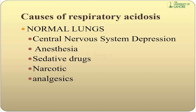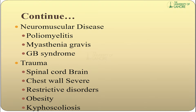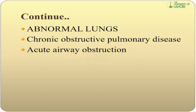Causes of respiratory acidosis — in normal lungs: central nervous system depression, anesthesia, sedative drugs, narcotics, and analgesia. Neuromuscular diseases include poliomyelitis, myasthenia gravis, and Guillain-Barré syndrome. In trauma: spinal cord or brain injury, chest wall severe injury, restrictive disorder, obesity, and kyphoscoliosis. In abnormal lungs: chronic obstructive pulmonary disease and acute airway obstruction.